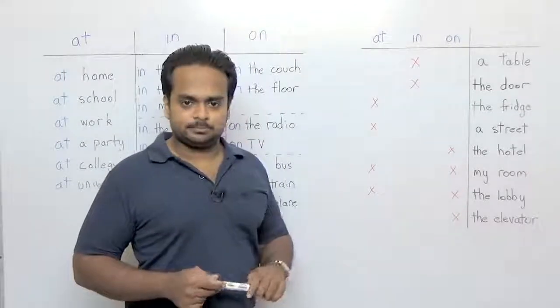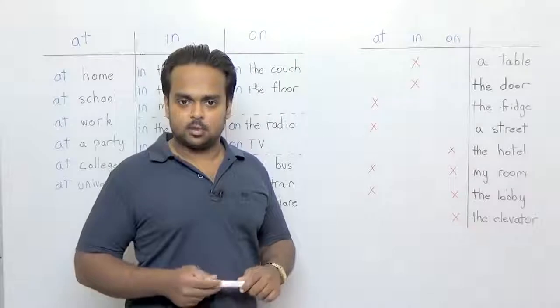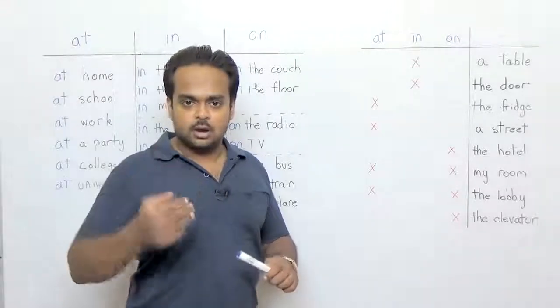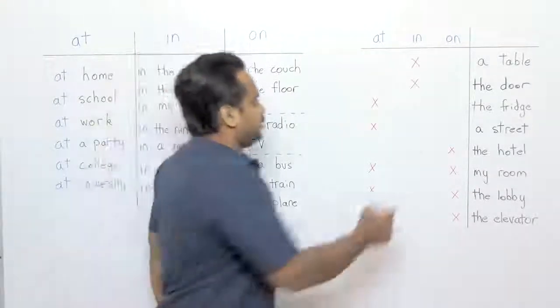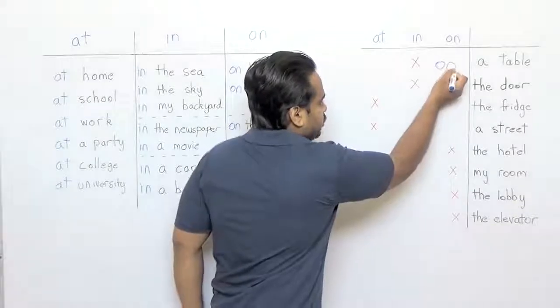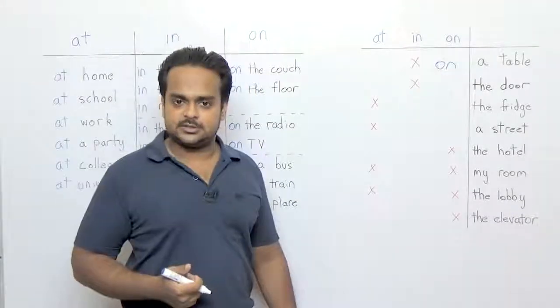First is table. Now like in my example where I said there are three books on the table, we can use on to show that there's something on top of a table.